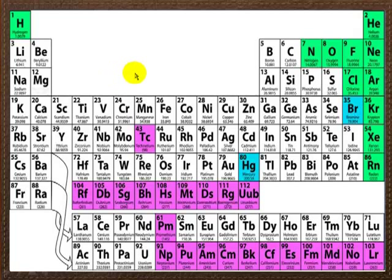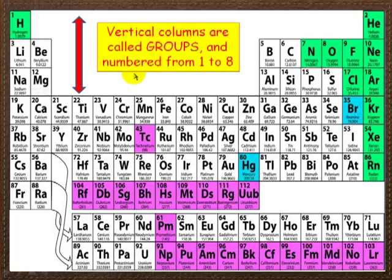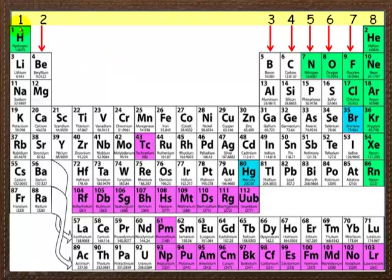Now let's navigate our way around. The first thing is you need to know that the vertical columns are called groups and they're numbered from 1 to 8. So group 1: hydrogen, lithium, sodium. Group 2: beryllium, magnesium.